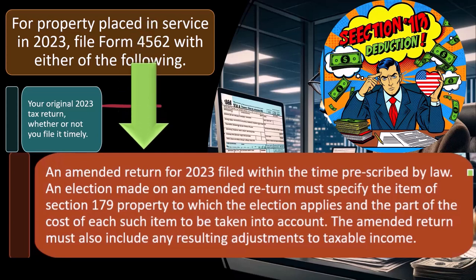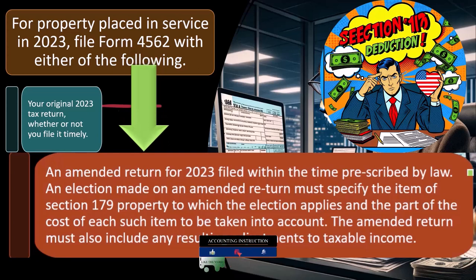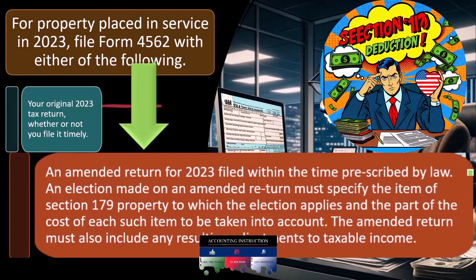An election made on an amended return must specify the item of Section 179 property to which the election applies and the part of the cost of each such item to be taken into account.